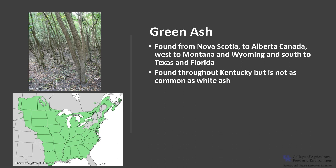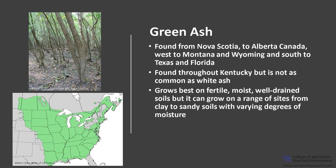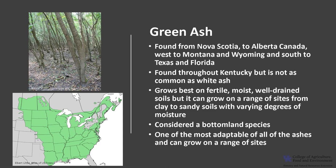Green ash grows best on fertile, moist, well-drained soils, but it can also grow in a range of sites from clay to sandy soils with varying degrees of moisture. It is considered a bottomland species that is found growing with sweet gum, cottonwood, willows, red maple, and bottomland oaks and hickories. It is one of the most adaptable of all the ashes.